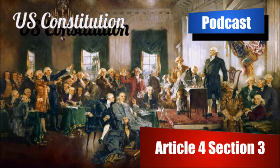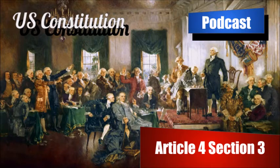But new states may be admitted by the Congress into this union. Each state is given what is known as the Enabling Act, passed by Congress, which allows them to become a state. In Missouri's Enabling Act, it allows the Missouri Territory to authorize the people of the Missouri Territory to form a constitution and state government, and for the admission of such state into the union — this is the key phrase — on equal footing with the original states.